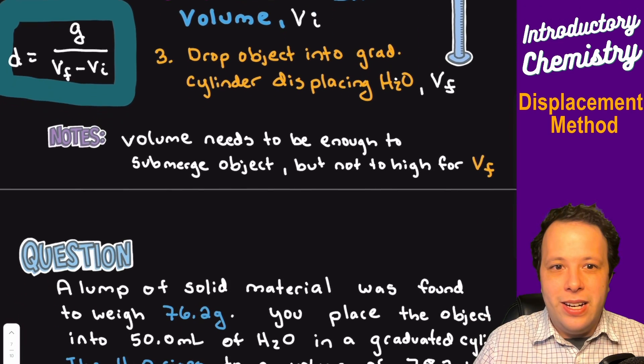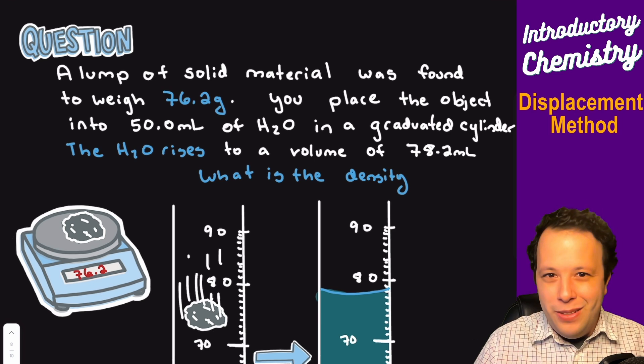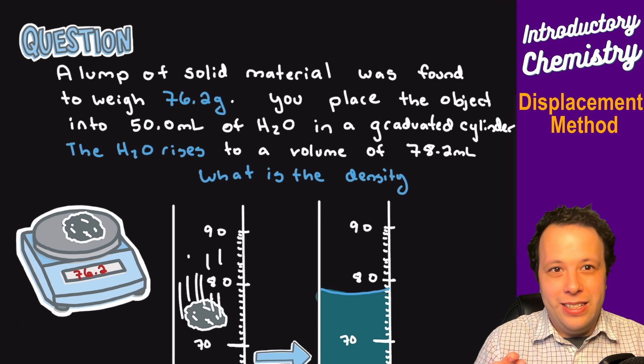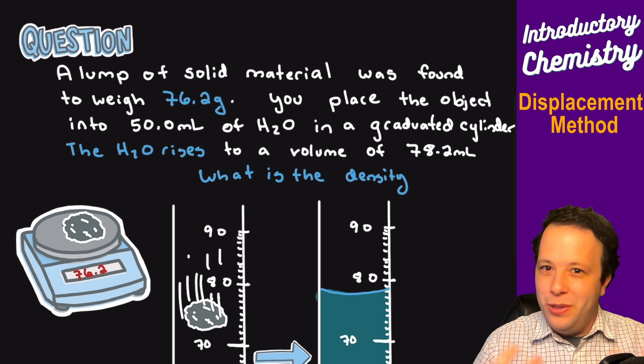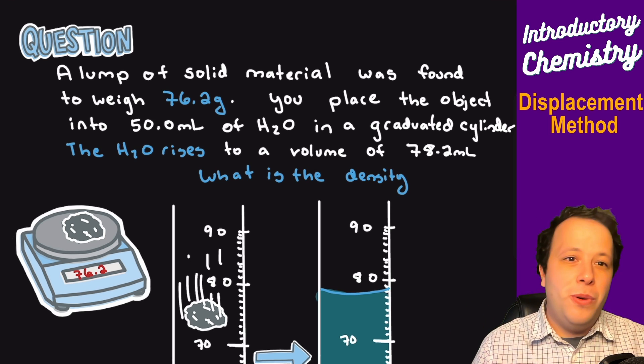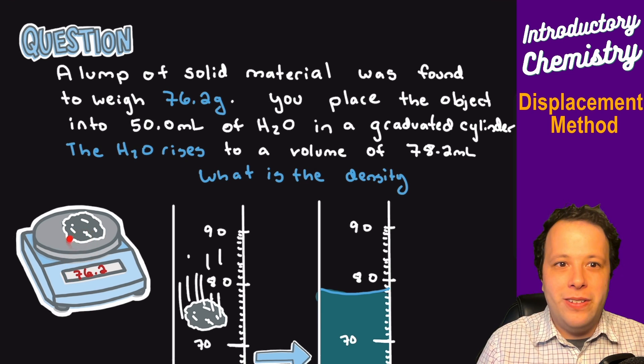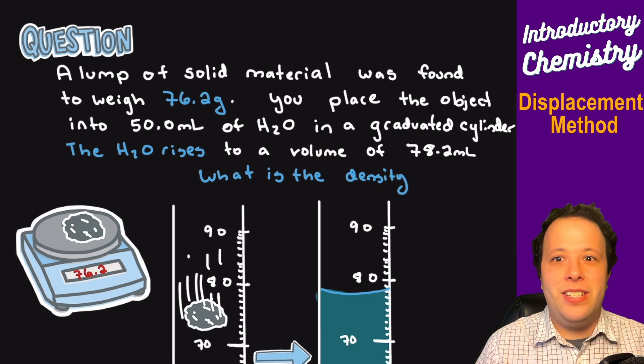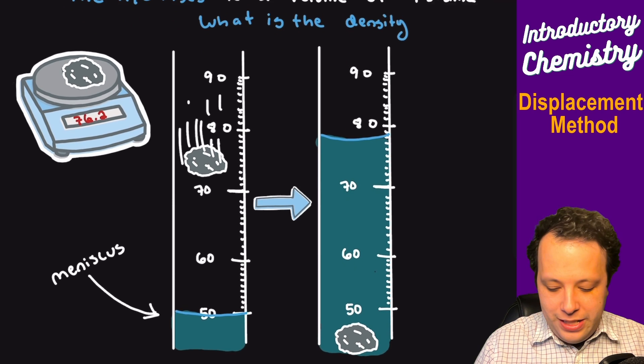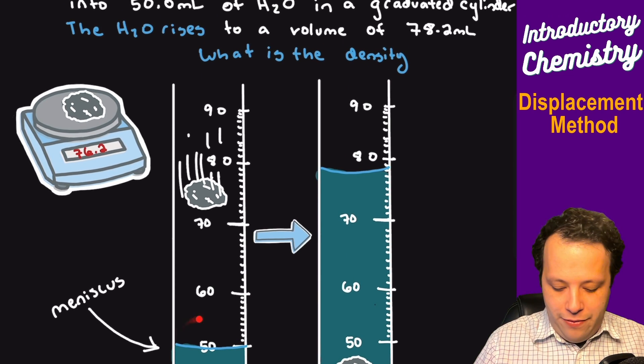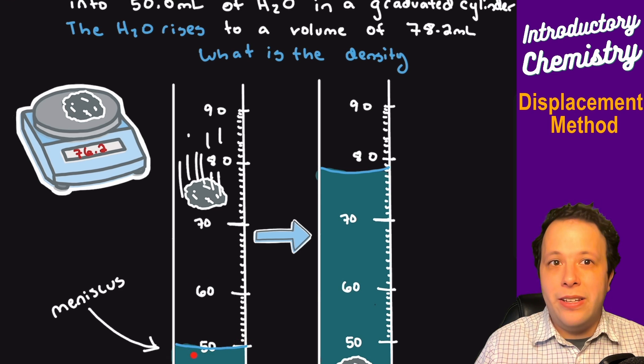So just to reiterate, let's take a look at a question to try to understand this and I'll even illustrate what exactly this looks like. Let's say if I have a lump of solid material, meaning a lump is a really weird shape, and this was found to weigh 76.2 grams. So I put my lump on the balance and I saw okay this is 76.2, great. Now as you can see I have two graduated cylinders here. I first measured out 50 milliliters and I looked at my meniscus to see that it was exactly on 50.